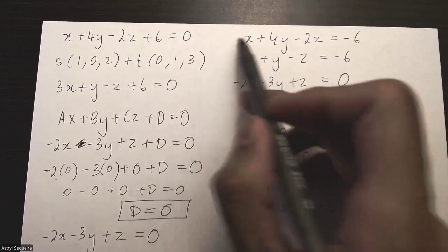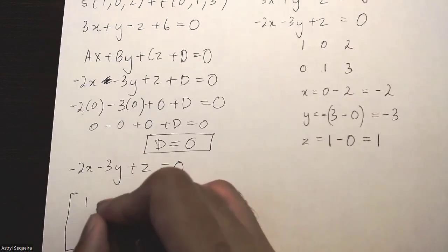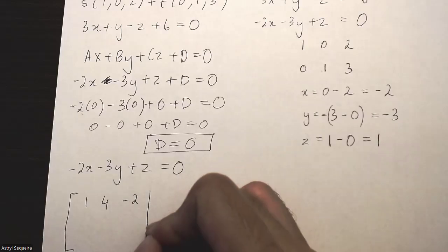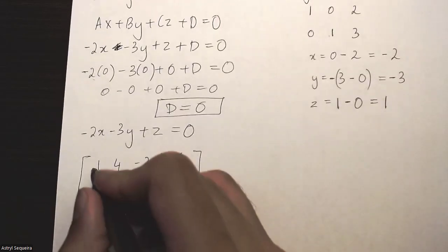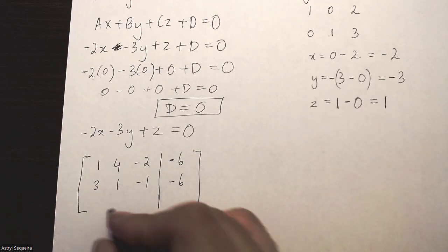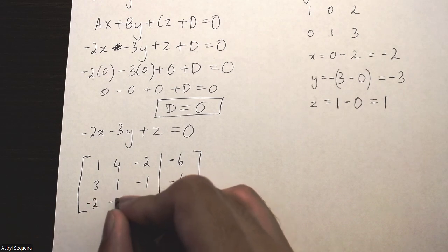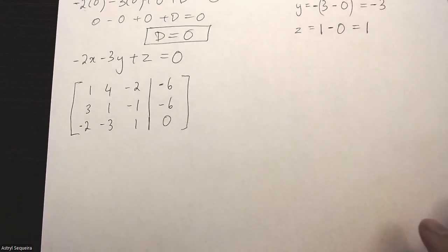So I'm just going to use all my coefficients there. I hope you know how to create a matrix. So it's 1, 4, negative 2, then negative 6, my first equation. 3, 1, negative 1, negative 6, and negative 2, negative 3, 1, and 0.